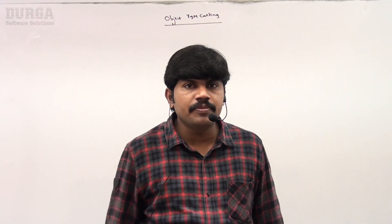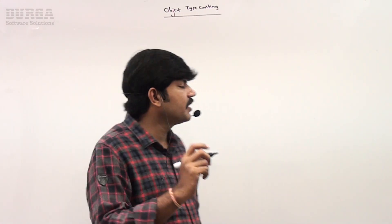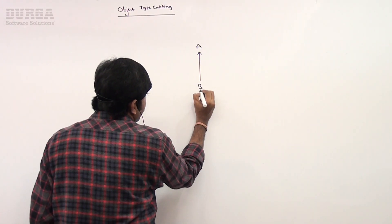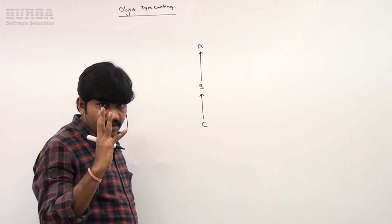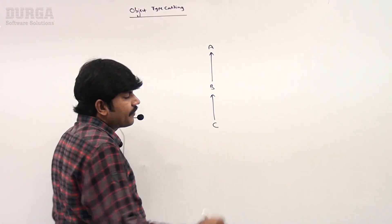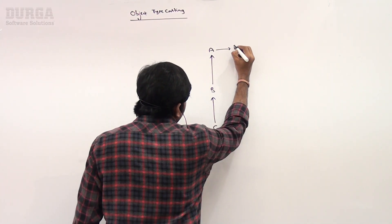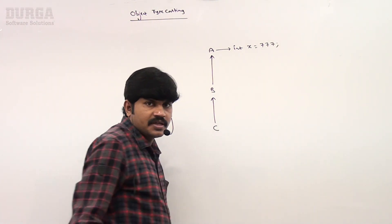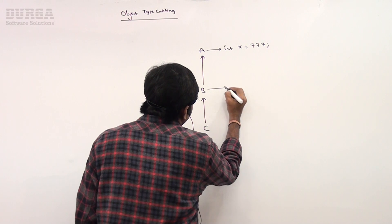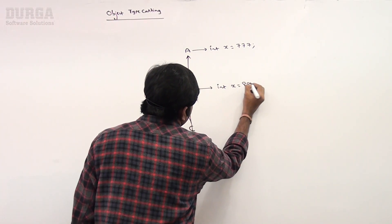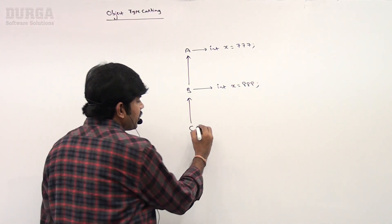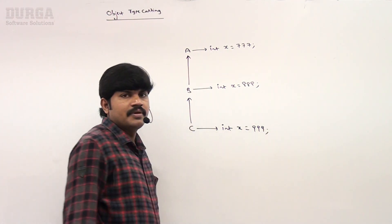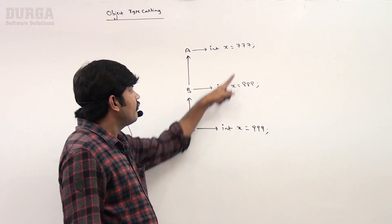One more possible topic related to object typecasting. Here I have three classes: A, B, and C, where C is the child of B and B is the child of A. Class A contains int x = 37, Class B contains int x = 38, and Class C contains int x = 39. Every class contains a variable with the same name but different values.